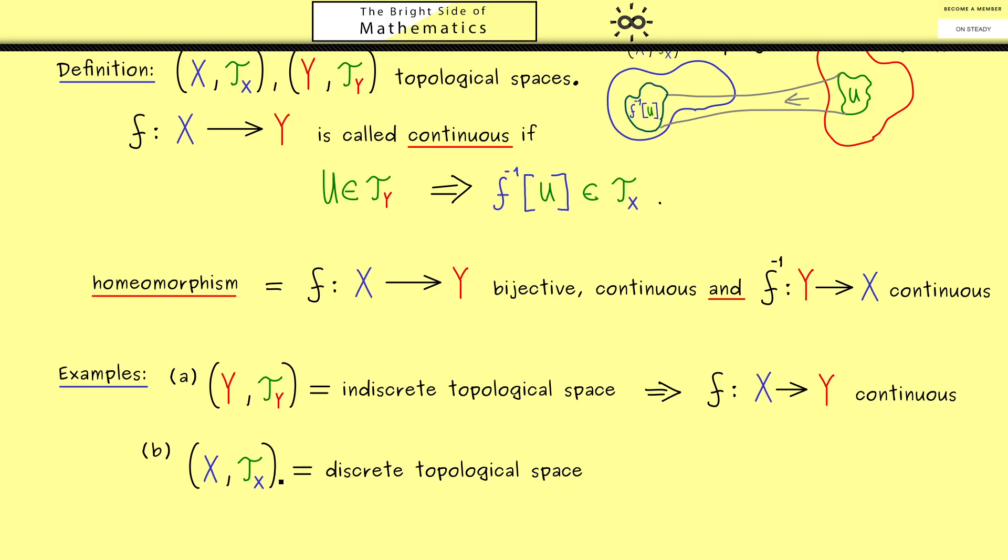Therefore you also immediately see it's no problem at all to fulfill this implication. So no matter which topology we choose on Y, we always get continuous maps.